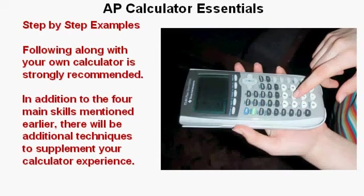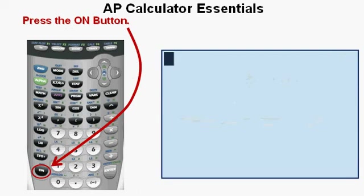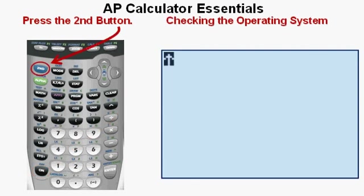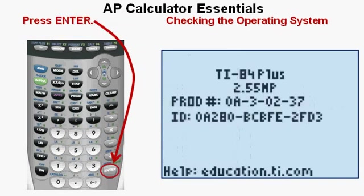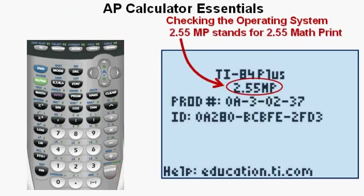In addition to the four main skills, there will be additional techniques to supplement your calculator experience. I will explain many of the nuances and idiosyncrasies you should be aware of. Press the ON button at the lower left of the keypad to turn on the calculator. Now we have to check to make sure we have a sufficiently updated operating system. Press the second key at the upper left of the keypad, then press the plus key to access the memory submenu, then press ENTER. 2.55MP stands for 2.55 Math Print — you need this version or later. Press clear to get to the home screen.